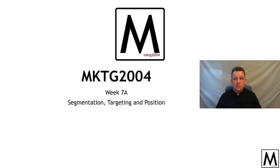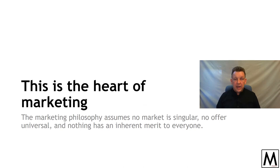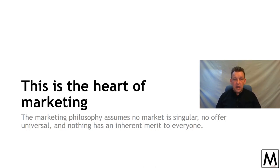Week 7: segmentation, targeting, and positioning. This is where we get into the real heart of marketing's applied practice. All of marketing is predicated on the idea that there is a customer, and that you have an offering that has value for that customer. To make this work on a practical level, we can't offer everything to everyone. So instead we prioritize who will be most responsive to our targeted offer and who will get the most benefit from our targeted value offering.